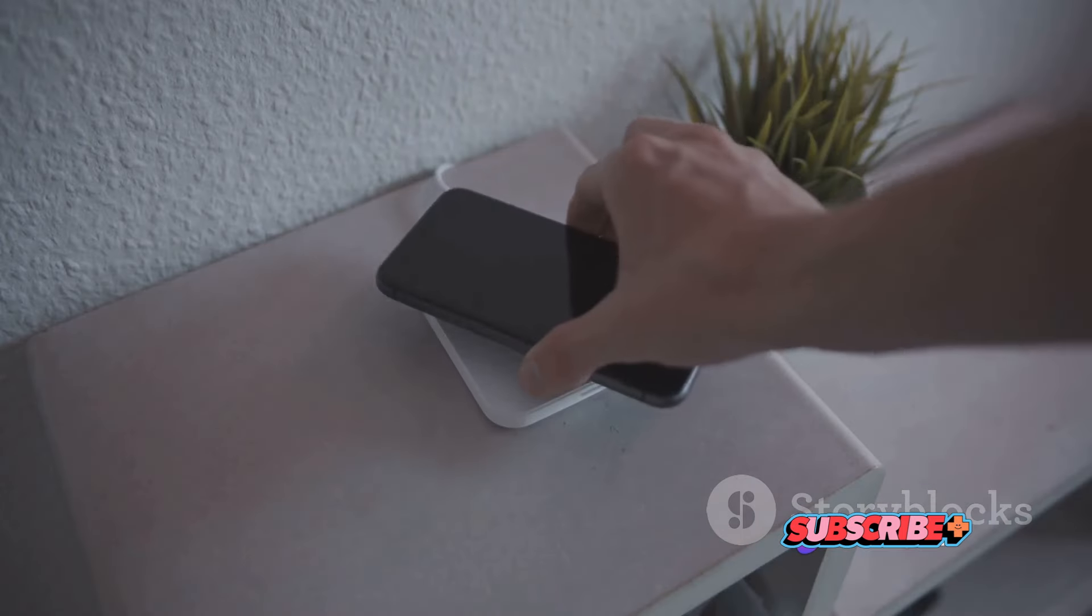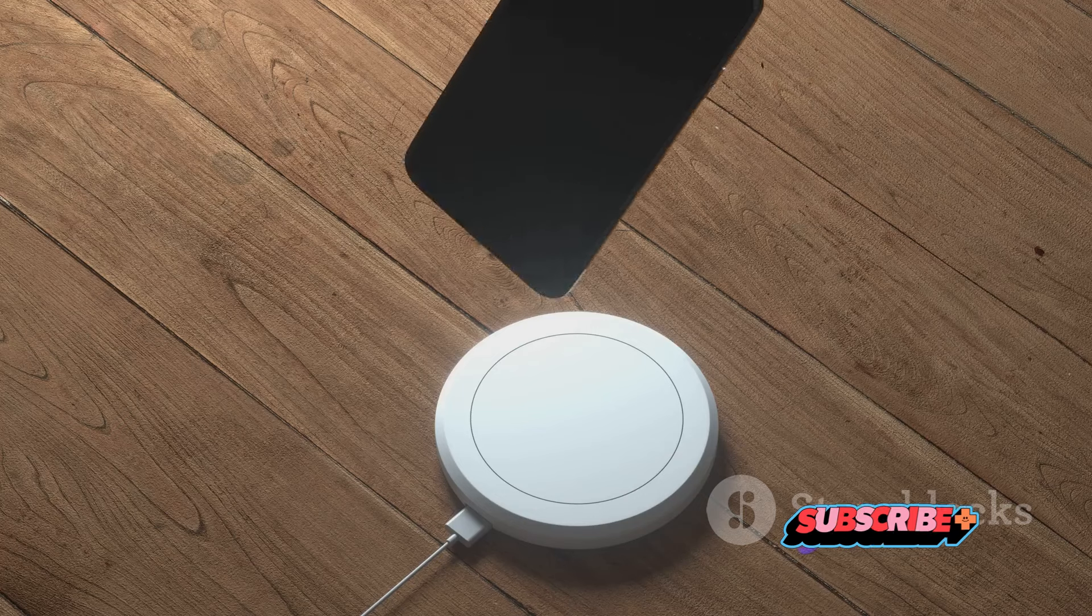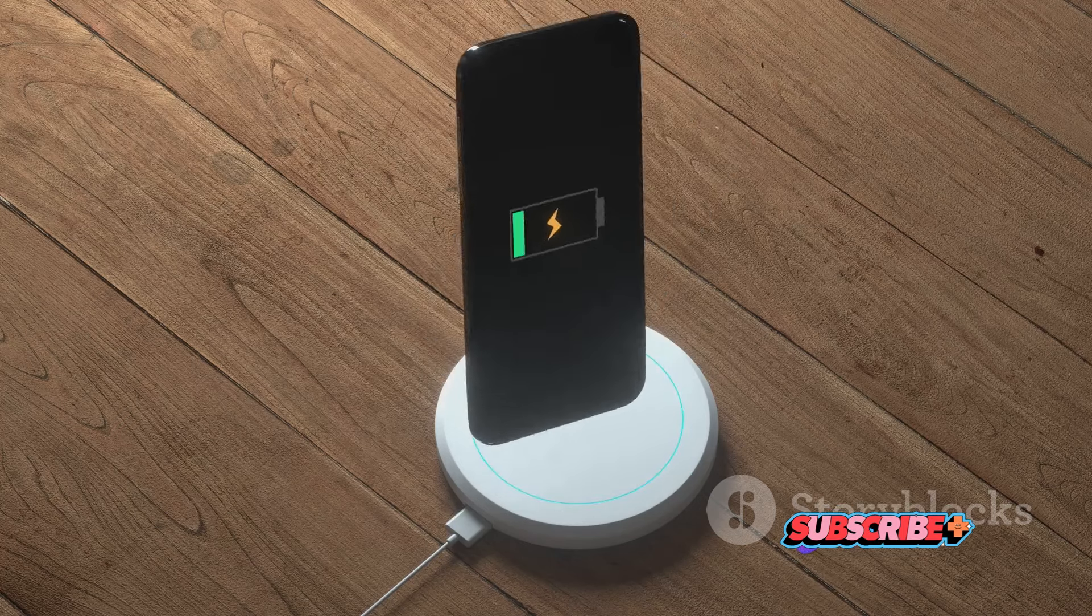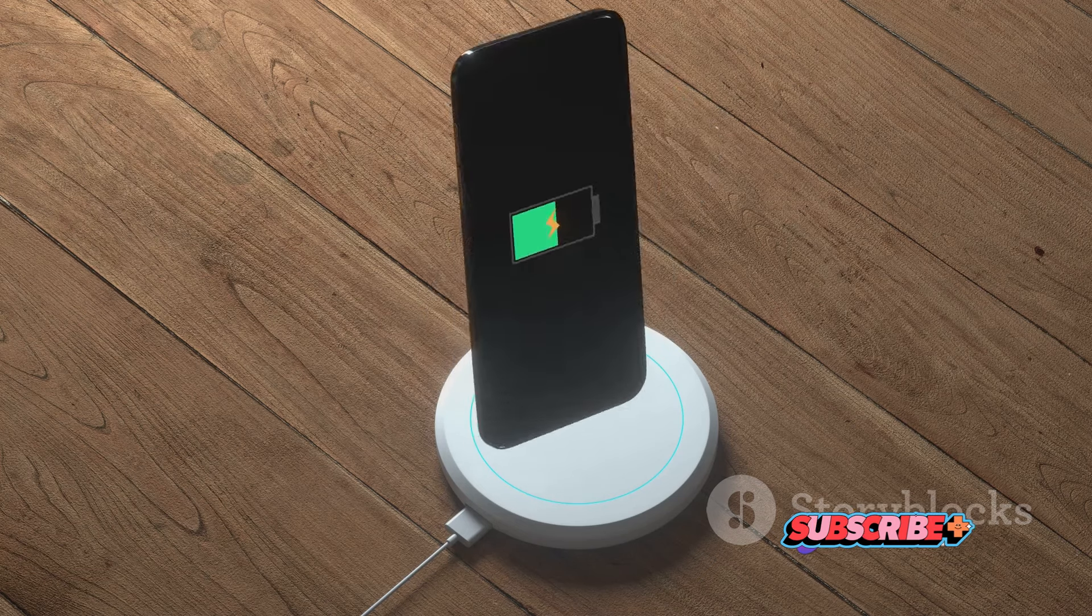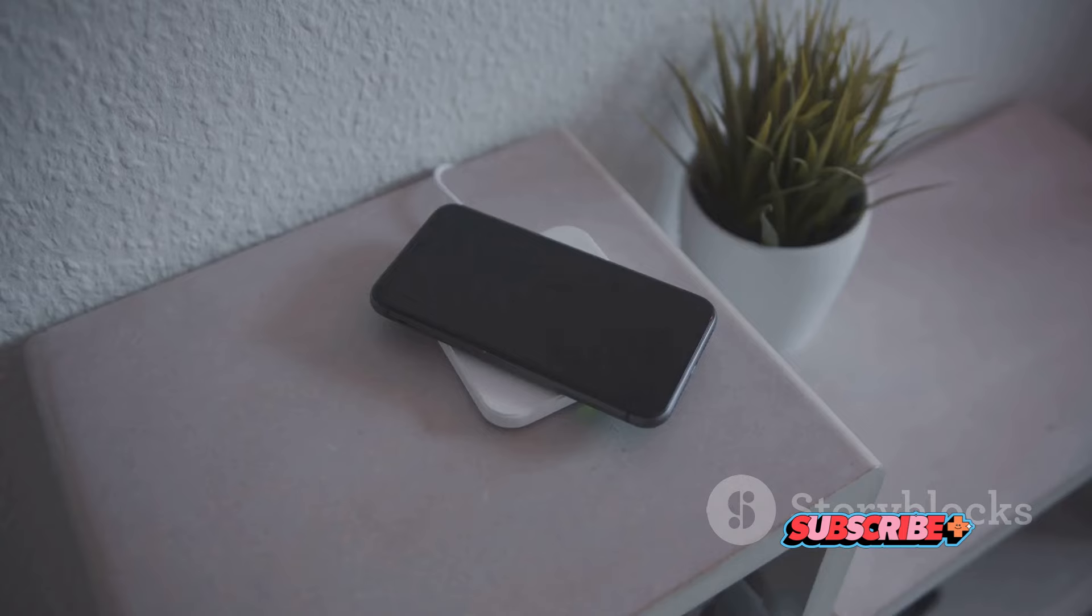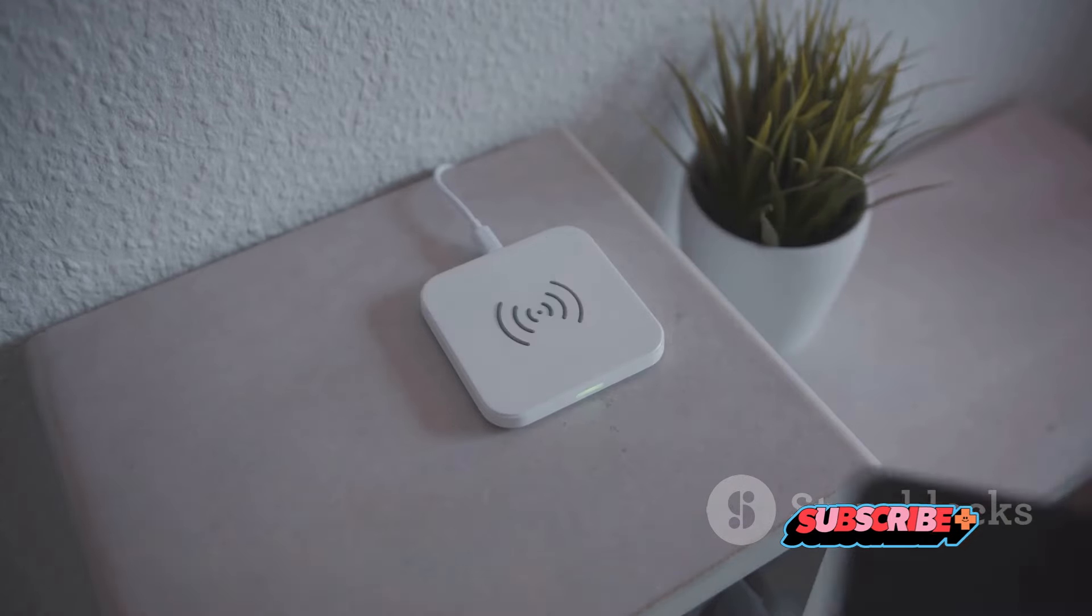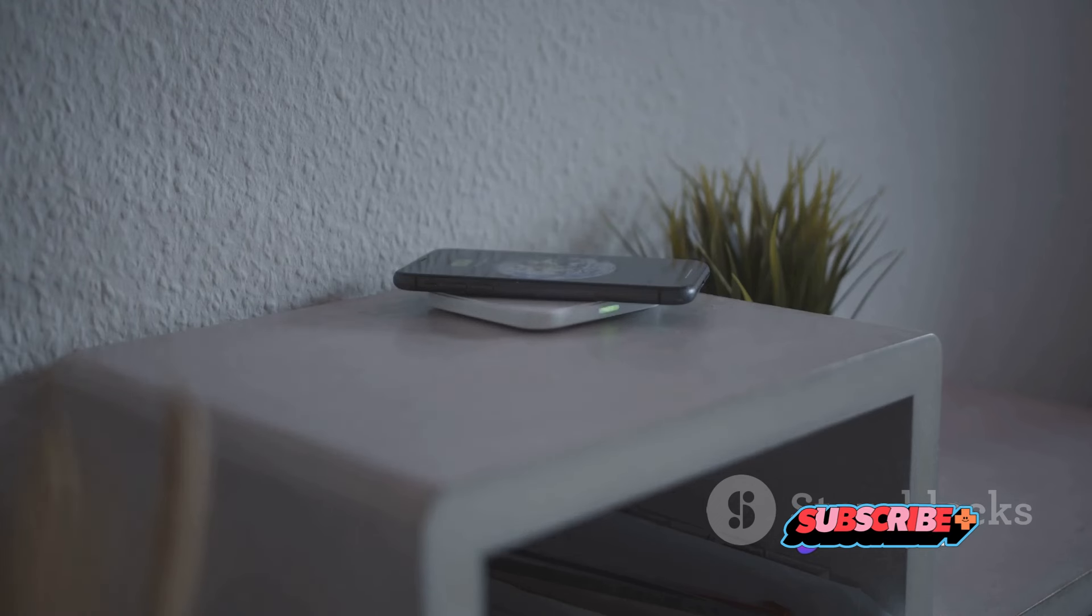Secondly, let's talk about wireless charging, an increasingly common feature in our smartphones and other devices. This works through a process called electromagnetic induction. Here's the simple version. There's a coil in your charging pad and another coil in your device. When electricity passes through the coil in the charging pad, it creates a magnetic field. This field induces a current in the coil in your device, charging its battery without a single wire in sight. It's like magic, but it's just coils doing their thing.